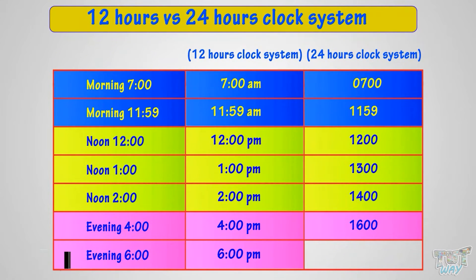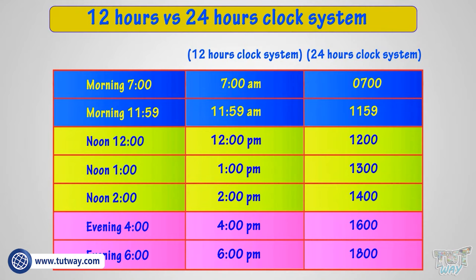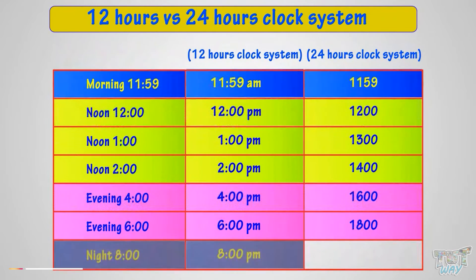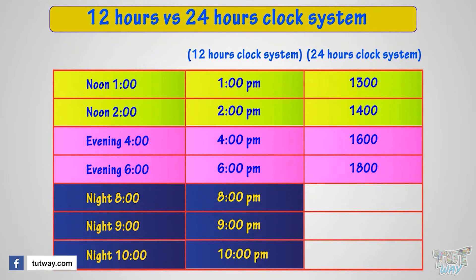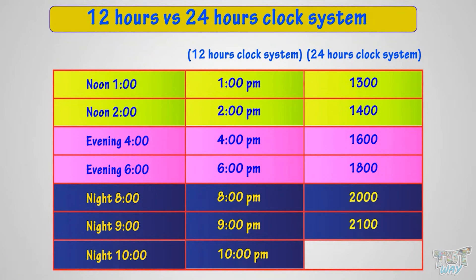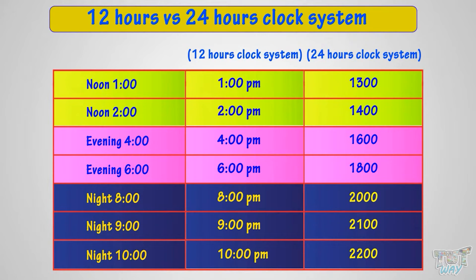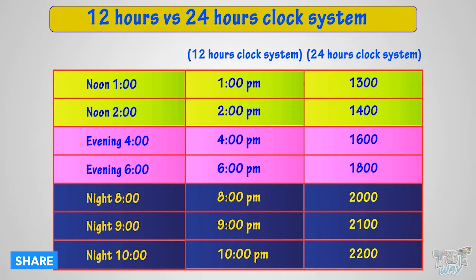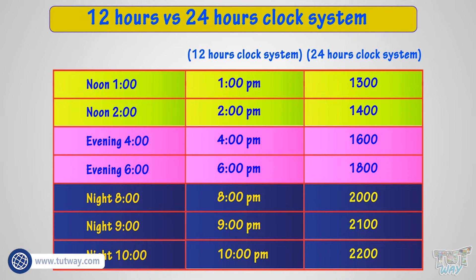6 in the evening is called 6 p.m. in the 12-hour clock system, and 1800 — that is 1800 hours — in the 24-hour clock system. 8 in the evening is called 8 p.m. in the 12-hour clock system, and 2000 — that is 2000 hours — in the 24-hour clock system. 10 at night is called 10 p.m. in the 12-hour clock system, and 2200 — that is 2200 hours — in the 24-hour clock system.